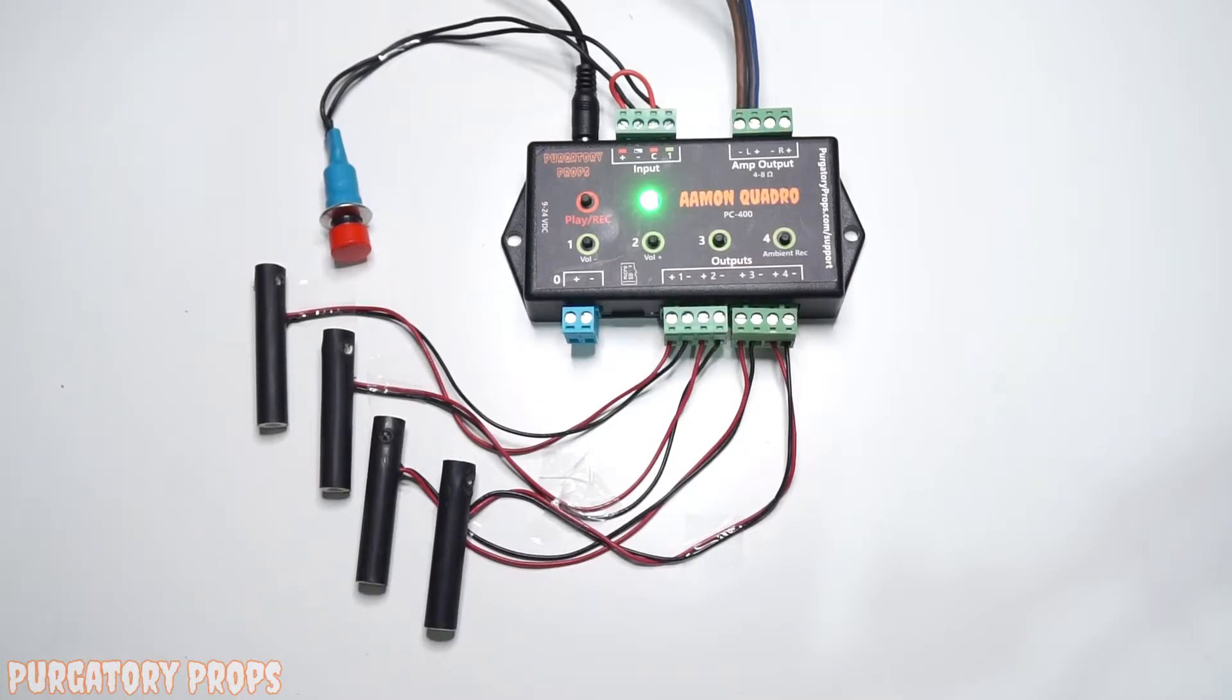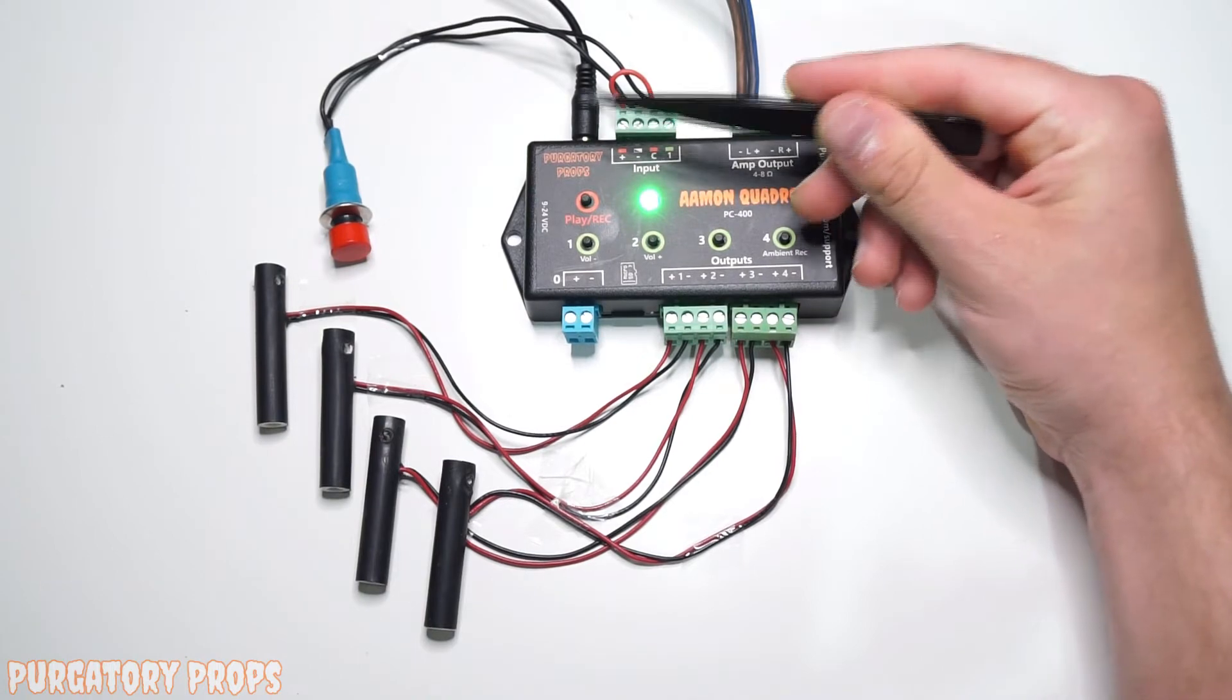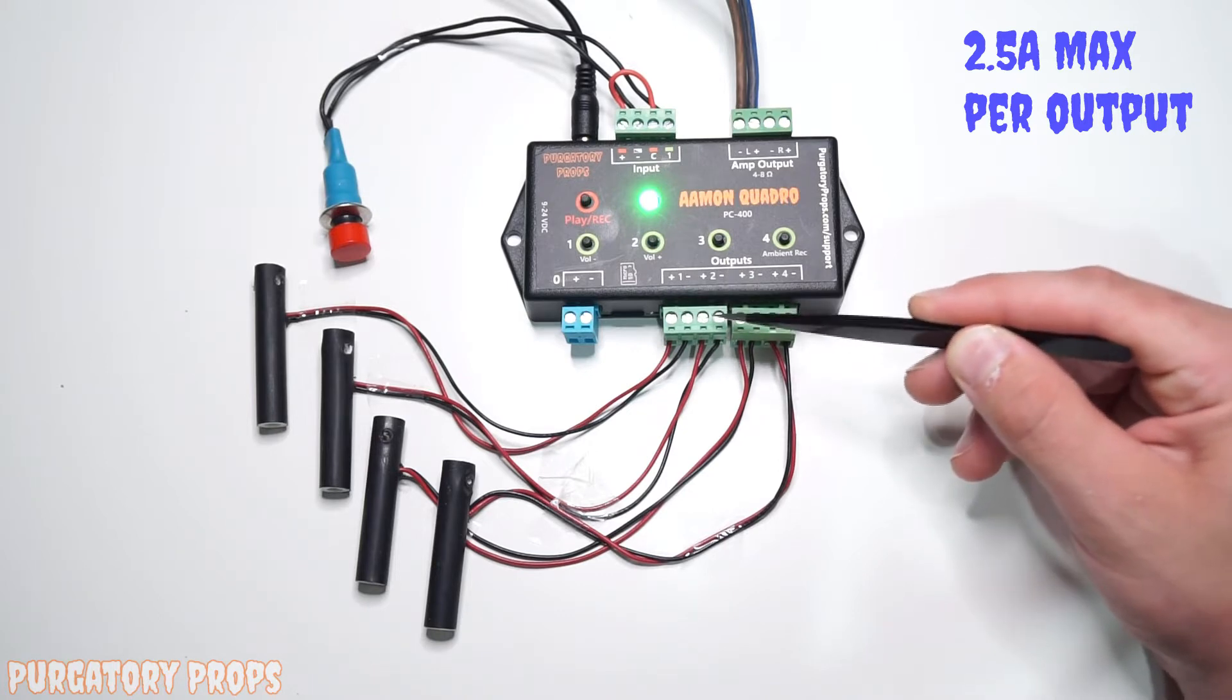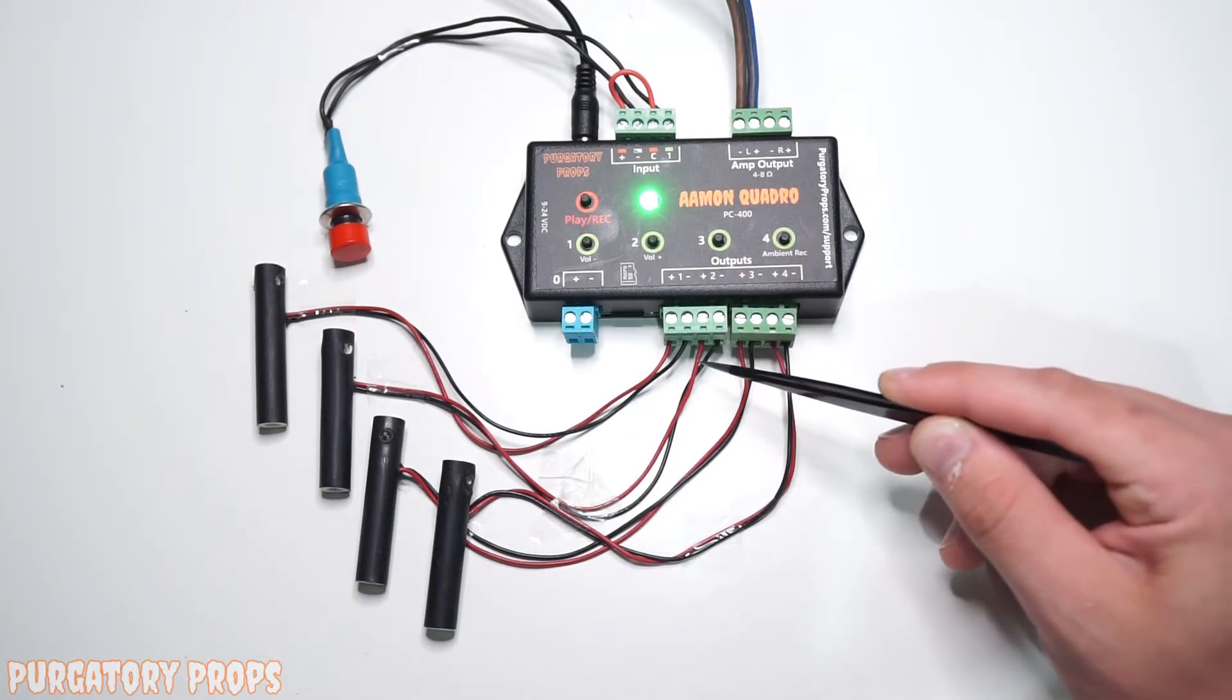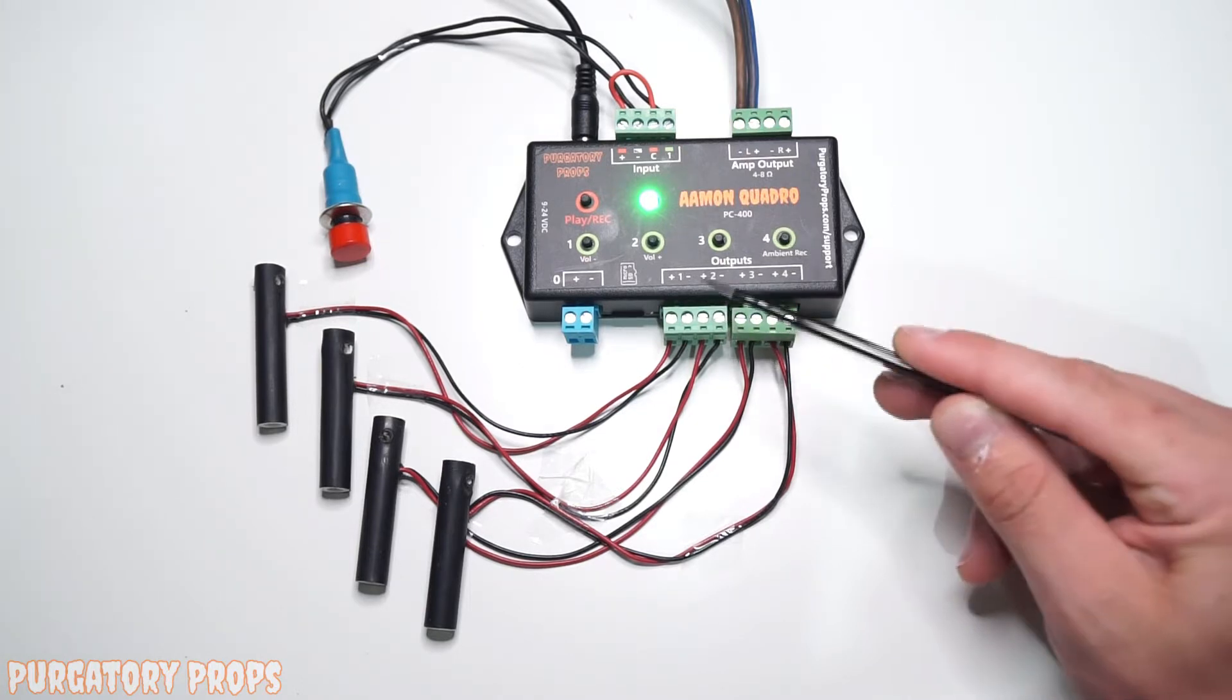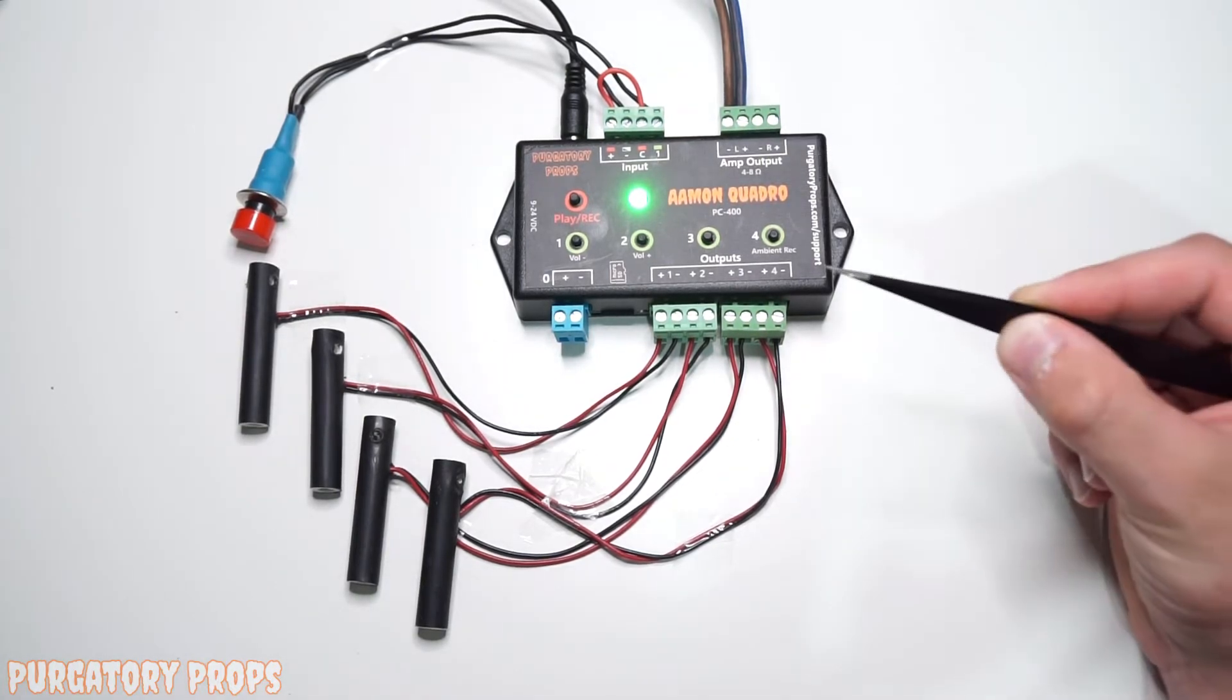So here we have a basic setup for the Amon Quadro. On all the outputs we just have 12 volt LEDs hooked up and we're powering the controller with 12 volts. These outputs, they're solid state outputs so you just have positive and negative output 1, positive and negative output 2, and so on all the way to output 4. So you can hook up anything that runs on 12 to 24 volts with these, so this can be hooked up directly to solenoids for air cylinders, air cannon solenoids, or just lights. We also have a speaker hooked up to the left channel of the amplifier output.